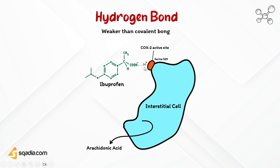A hydrogen bond acceptor is a group or atom that attracts or accepts a hydrogen atom. Common hydrogen bond acceptor groups include oxygen, nitrogen, and fluorine. When the drug molecule approaches the receptor, hydrogen bonding can occur between the hydrogen bond donor in the drug and the hydrogen bond acceptor in the receptor. Hydrogen bonds are generally weaker than covalent bonds but stronger than other non-covalent interactions such as van der Waals forces.